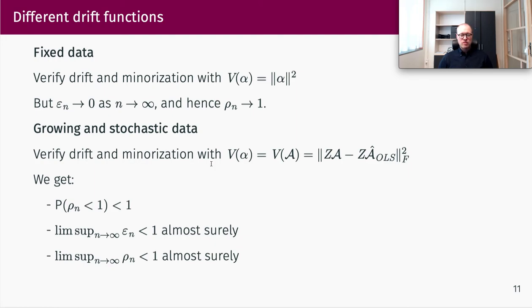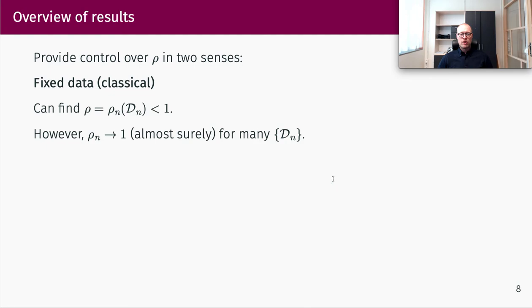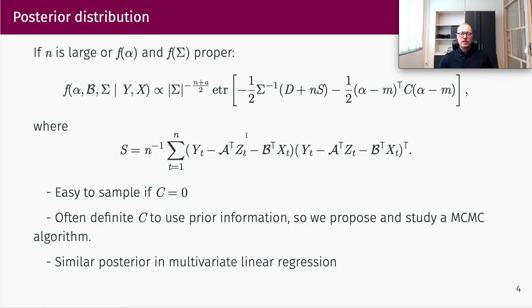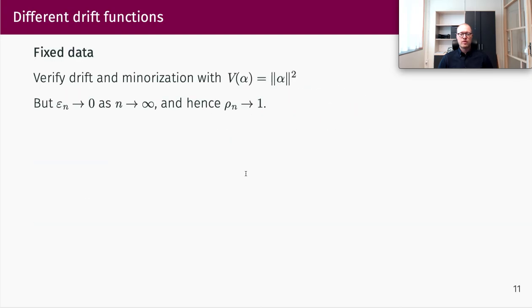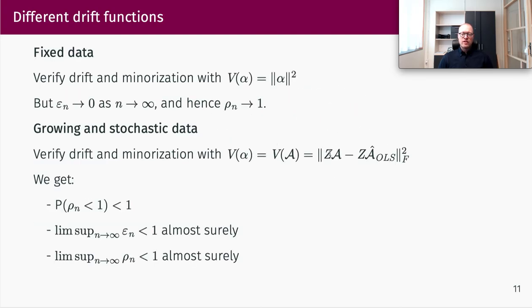For the convergence complexity analysis, we instead use a drift function V equal to the squared Frobenius norm of the difference between Z times A and Z times alpha-hat OLS. Here Z is the design matrix corresponding to the coefficient A or alpha — the matrix whose t-th row from t=1 to N is z_t. So we're looking essentially at the difference of predicted values under OLS and predicted values at the current parameter. Notice this drift function doesn't depend directly on the data in the same way, which has the effect of yielding a convergence rate bounded away from one.